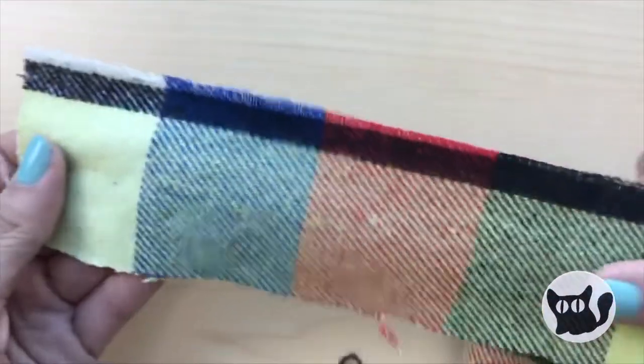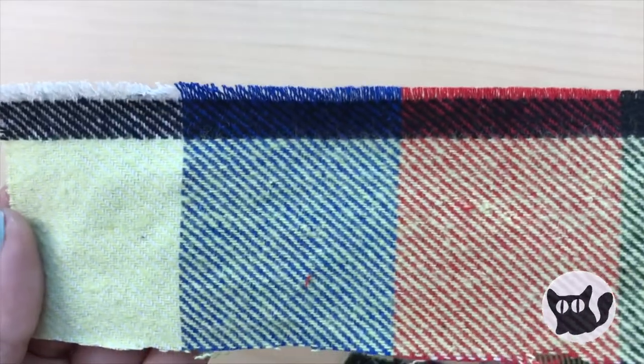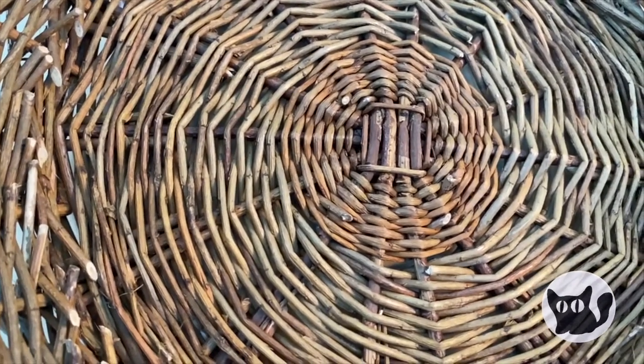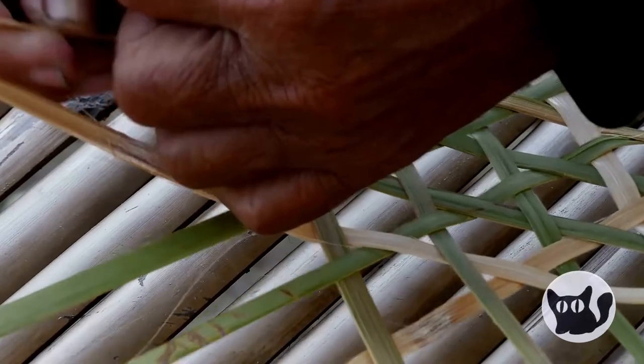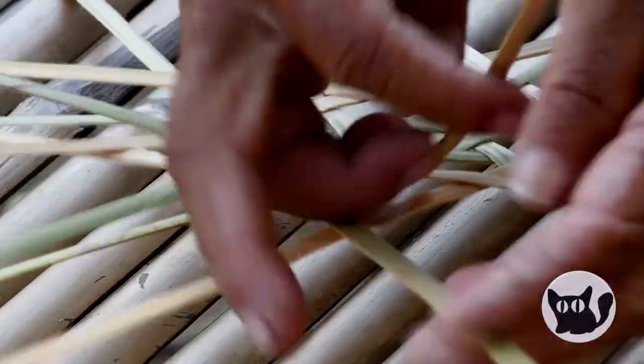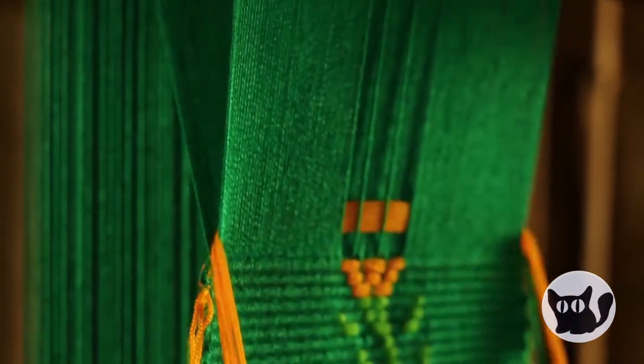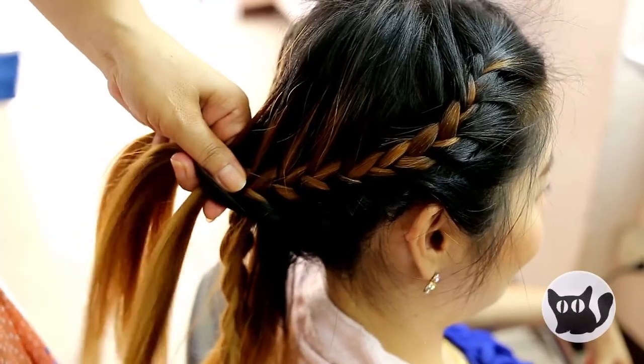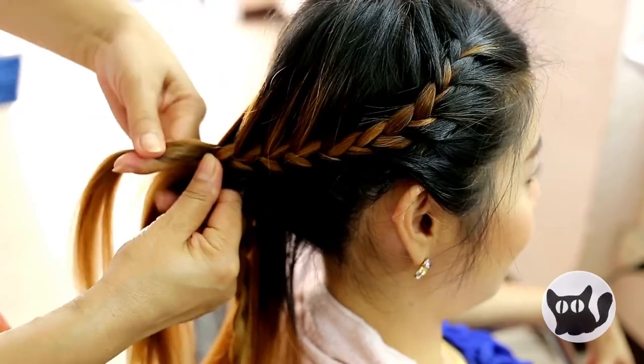Ever wondered how the cloth for your pants or shirt was made, or how a basket or rug was created? They were woven. How you weave your paper strips will determine what your weaving will look like. You might already know how to weave and you don't even know it. If you've ever braided hair, then you've already learned one weaving technique.